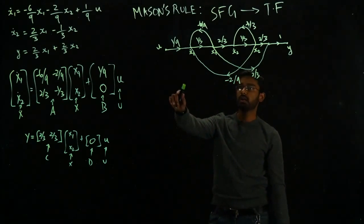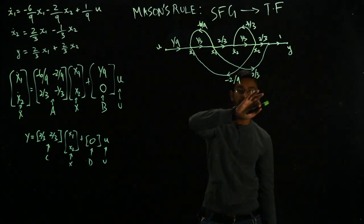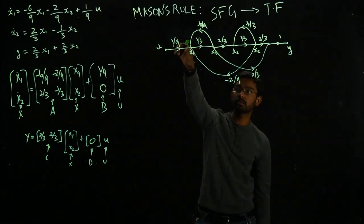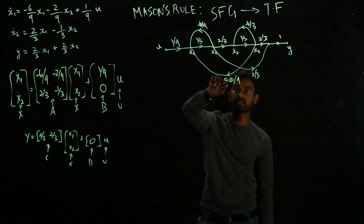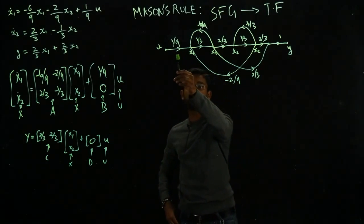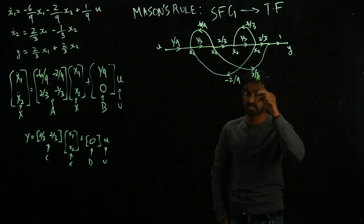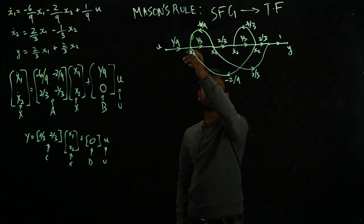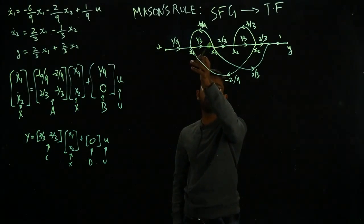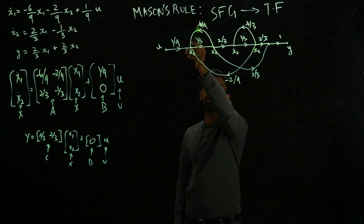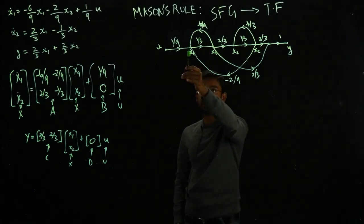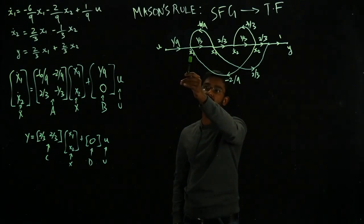The directions will specify how the signal is traveling. If you take this guy, for example, x₁ is being multiplied by minus 6 over 9 and it is going to contribute to x₁ dot.